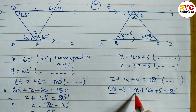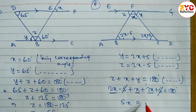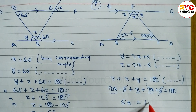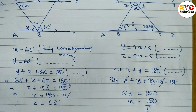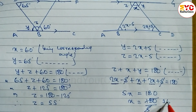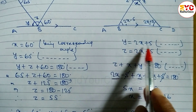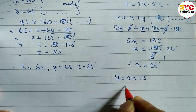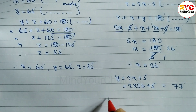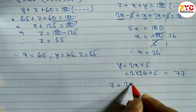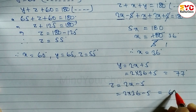Now adding like terms: 2x plus x plus 2x gives 5x, and negative 5 plus positive 5 gives 0. So 5x is equal to 180. Dividing: x is equal to 180 divided by 5, therefore x is equal to 36 degrees. Now finding y: y is equal to 2x plus 5, so y equals 2 times 36 plus 5, giving y equal to 77 degrees. Similarly, z is equal to 2x minus 5, so z equals 2 times 36 minus 5, giving z equal to 67 degrees.